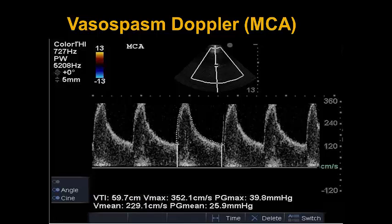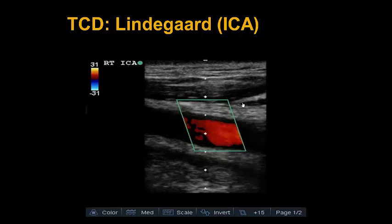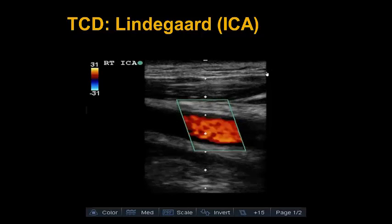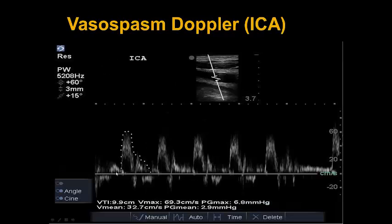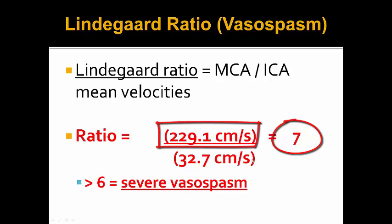To confirm this is not just hyperemia, we perform the Lindegard ratio. We switch to the linear probe and look at the ipsilateral ICA — the right ICA side of this patient. We look for the carotid flow, perform another pulse wave Doppler, and trace a VTI of that curve. The V-mean of the ICA is 33 centimeters per second. Using the Lindegard ratio, we take our MCA flow of 229 centimeters per second divided by our ICA mean flow of 33 centimeters per second — the ratio is about 7. Since severe vasospasm is greater than 6, this patient has severe vasospasm based on both the Lindegard ratio and individual velocities greater than 200 centimeters per second.